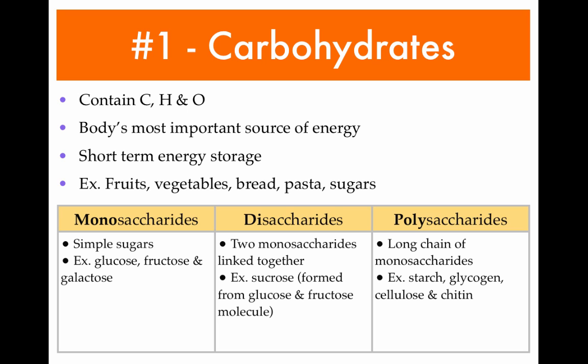Disaccharides are the second type of carbohydrates. They consist of 2 monosaccharides that are linked together. An example would be sucrose, which is formed from a glucose and a fructose molecule. Sucrose would be something like your simple table sugar. Polysaccharides are your long chains of monosaccharides — examples include starch, found in potatoes, glycogen, cellulose and chitin.